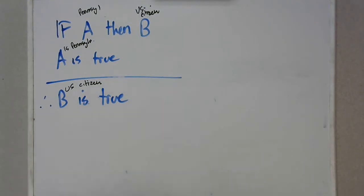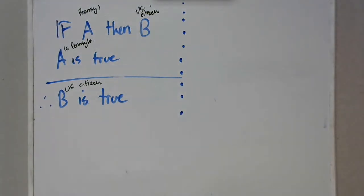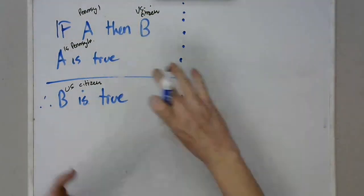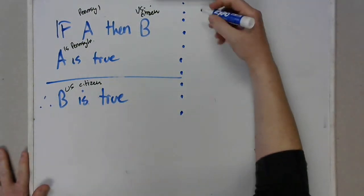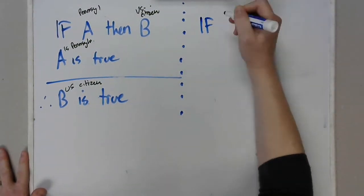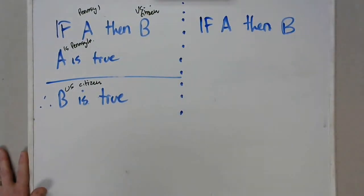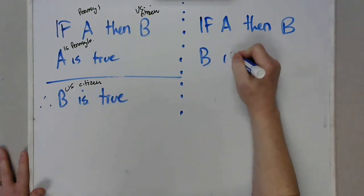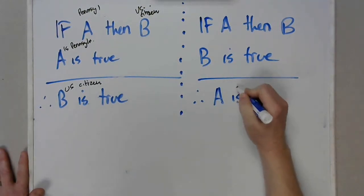Now let me show you a different form of this syllogism that is invalid. It's called a formal logical fallacy — 'formal' in the sense of a badly formed or badly shaped argument — and it looks like this: if A is true, then B is true; B is true; therefore A is true.